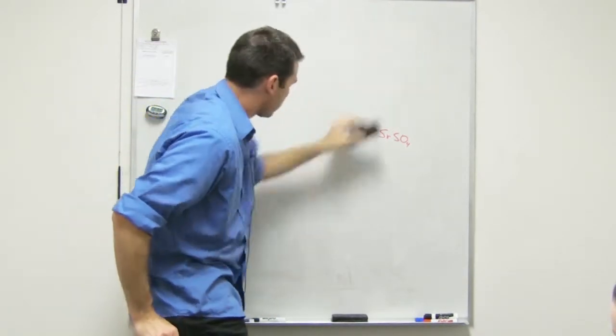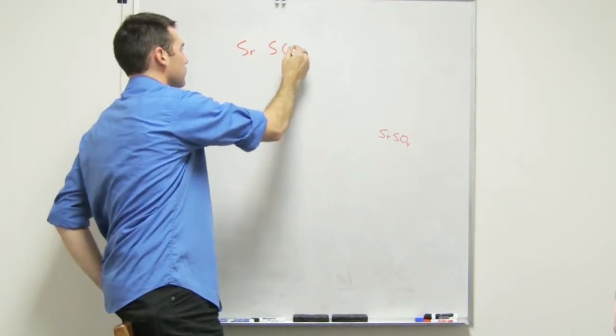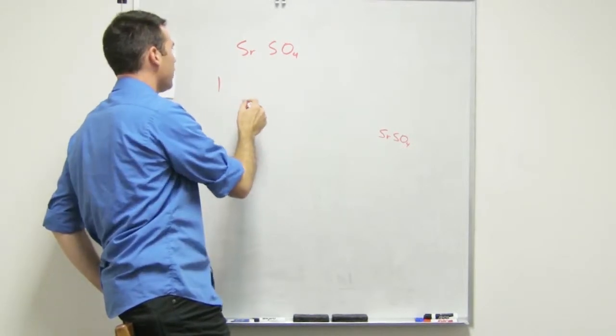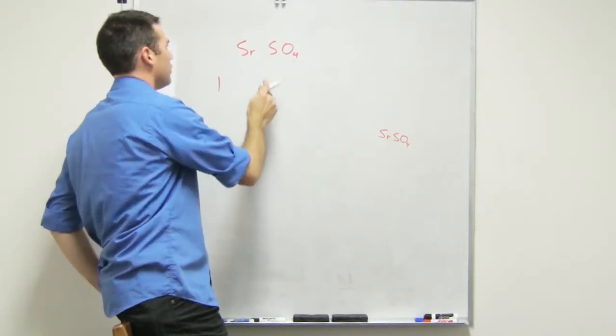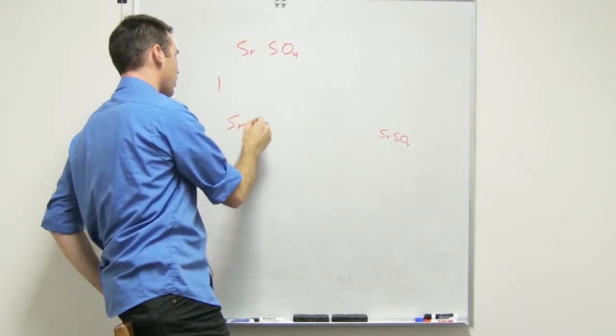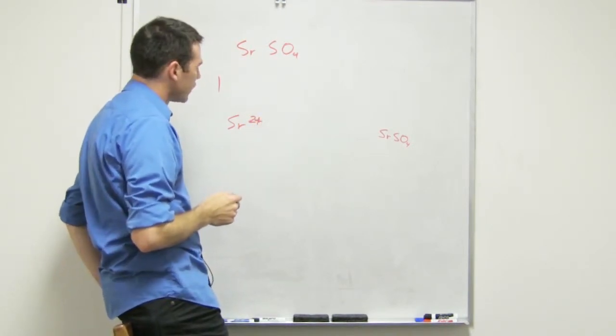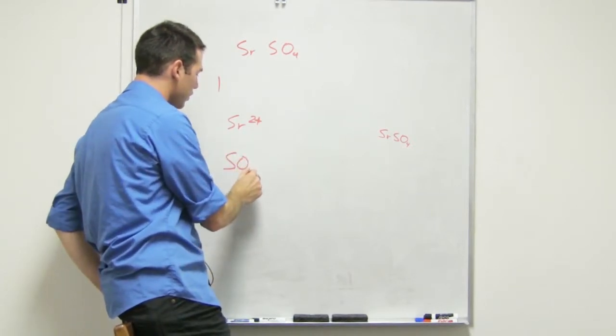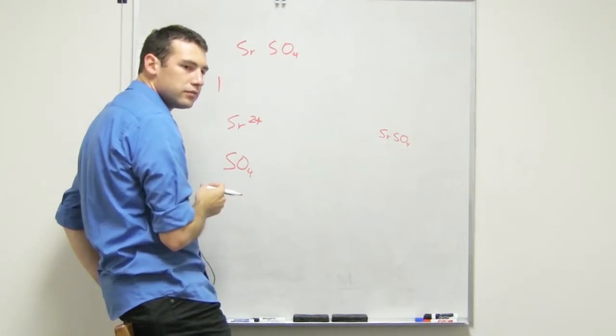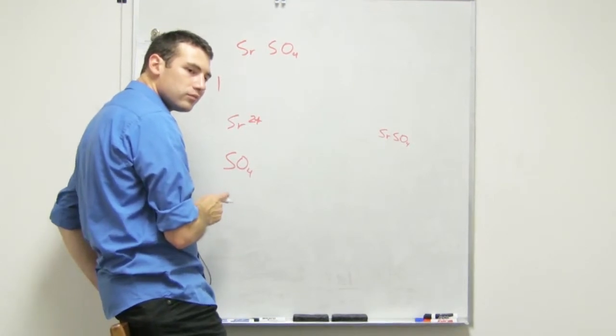Okay, so we got SrSO4. We see that one Sr is equal to... negative two? No, positive two. Yes, very important to note: Sr is positive two. So the SO4, because it's a one-to-one ratio, SO4 has to have a charge of what? What does that SO4 have a charge of? Negative four?